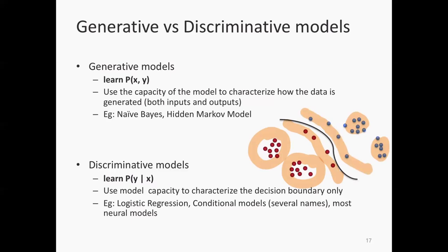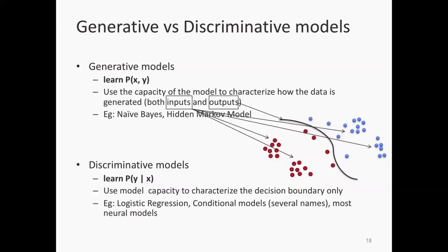What a generative model does: a generative model characterizes how the input, how the entire data and the labels are generated. A generative model has to use the parameters of the model to discover these clusterings of data and the fact that on one side you have blue and one side you have red. So it has to discover these clusters, all this underlying structure in the data, plus the fact that this side is blue, this side is red, and that side is blue.